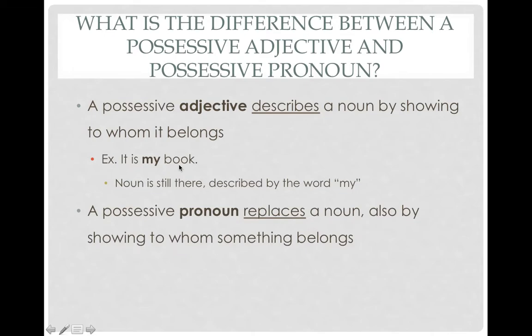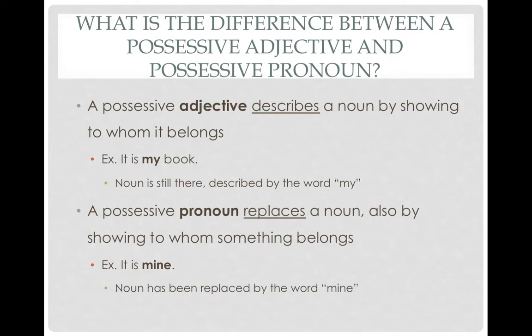On the other hand, a possessive pronoun replaces a noun. It still shows to whom something belongs, but it replaces the noun rather than just describing it. So an example would be saying 'It is mine.' Both sentences show who the book belongs to, just in different contexts. You wouldn't say 'mine' out of nowhere, because people won't know what you're talking about. The noun has been replaced by 'mine,' making it a possessive pronoun, whereas 'my' is a possessive adjective.